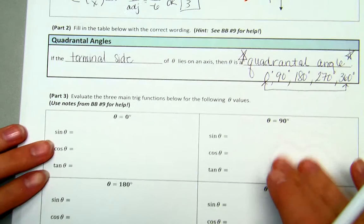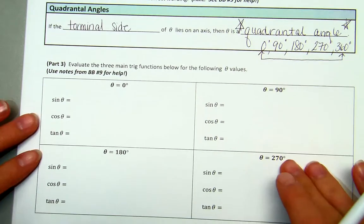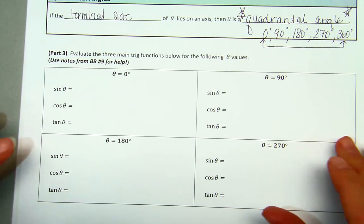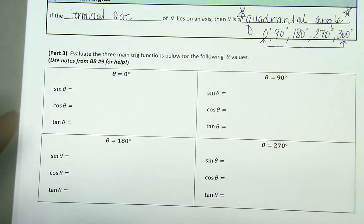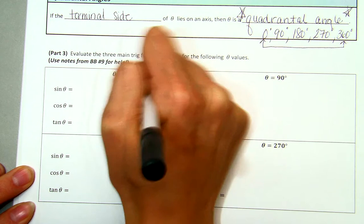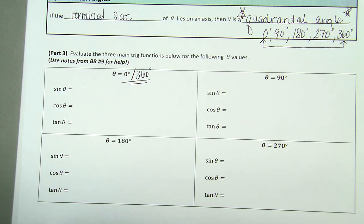In part three, continuing from a previous conversation — we discussed this in Blackboard number nine — we want to find the sine, cosine, and tangent values of our quadrantal angles. Since 0 degrees and 360 degrees are coterminal, whatever sine, cosine, and tangent are for 0 degrees will be the same for 360 degrees. So we essentially have four different angle values to find.